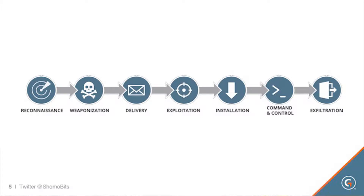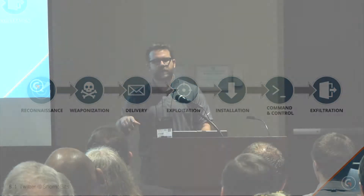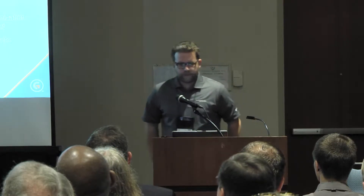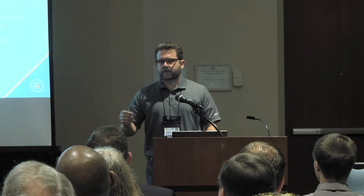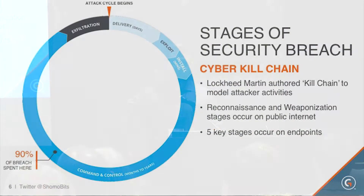This is a great model, but there are some criticisms. One is that adversaries don't always go through steps one through seven in order — some argue it's cyclical. Another criticism is that it doesn't really emphasize which stages are most important to you. So I'm going to present the kill chain as a circle, starting clockwise from the top with the five stages that actually occur within your network, beginning with delivery.